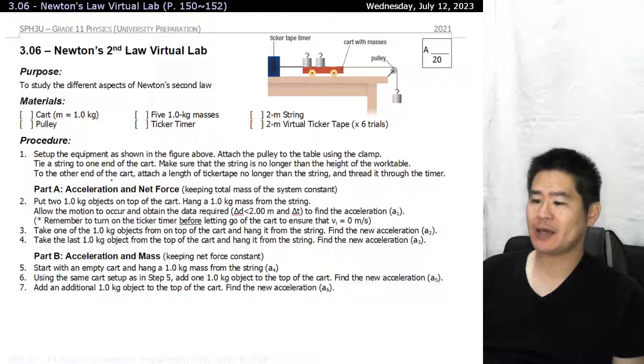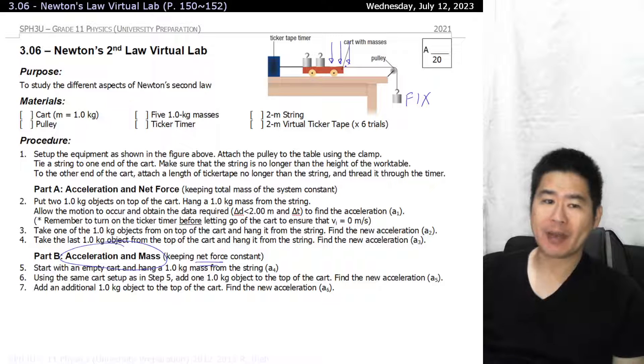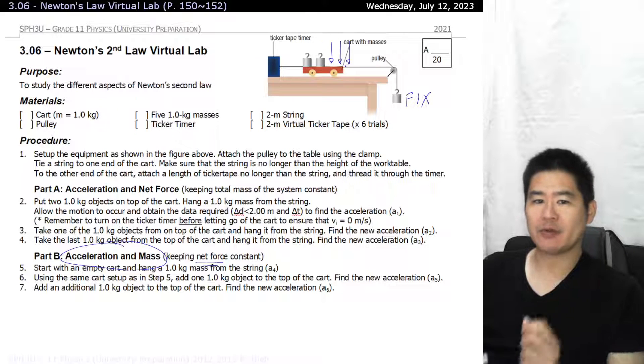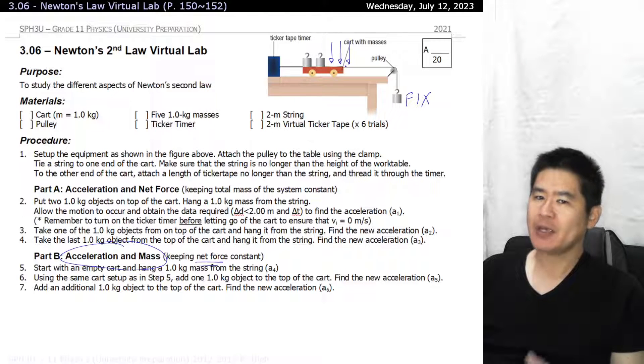The next part of the lab is taking a look at the relationship between acceleration and mass while keeping the net force constant. What you're going to do is fix the value of the hanging mass. Just leave it alone. Then you're going to gradually add more and more mass onto the cart and observe its rate of acceleration. Now you may naturally know that the heavier the object is, the slower it's going to accelerate.